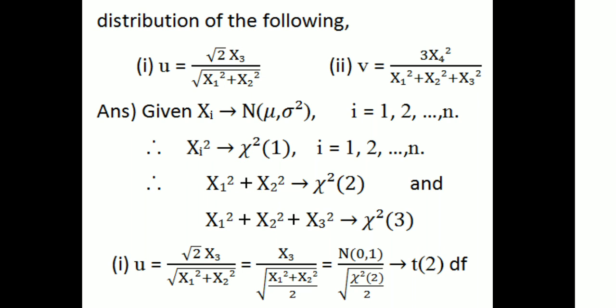x₁² + x₂² follows chi-square distribution with 2 degrees of freedom. Similarly, x₁² + x₂² + x₃² follows chi-square distribution with 3 degrees of freedom. Next: u = √2 · x₃ / √(x₁² + x₂²), which can be rewritten as x₃ / [√(x₁² + x₂²) / 2].